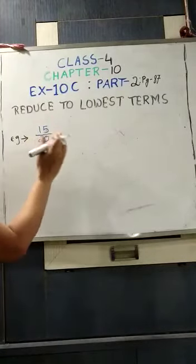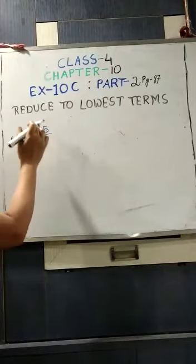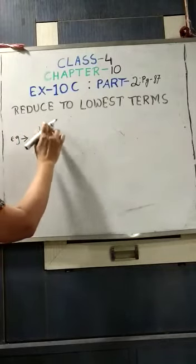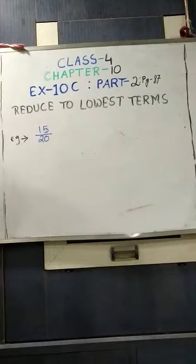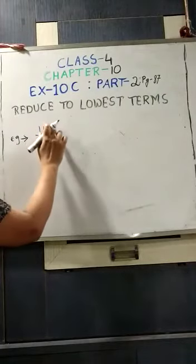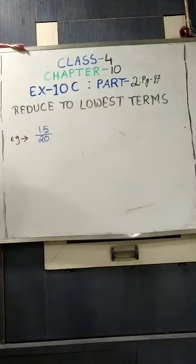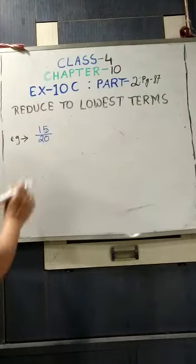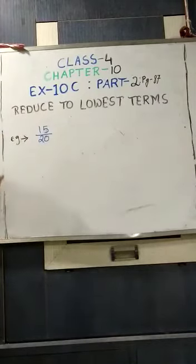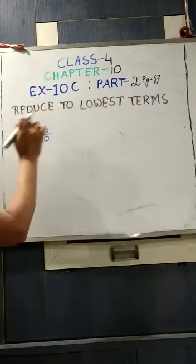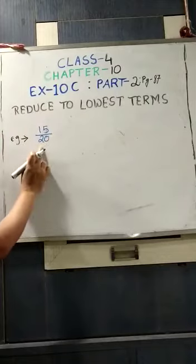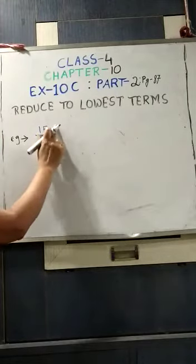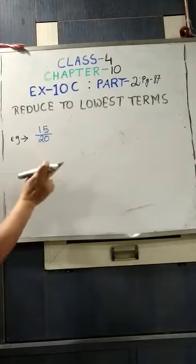Whatever number you take, that number should divide 15 as well as 20 exactly. So can you tell me what that number is? If we take 2 — 15 is not divisible by 2. 15 is an odd number but 20 is an even number. 20 is divisible by 2 but 15 is not, so we cannot take 2.